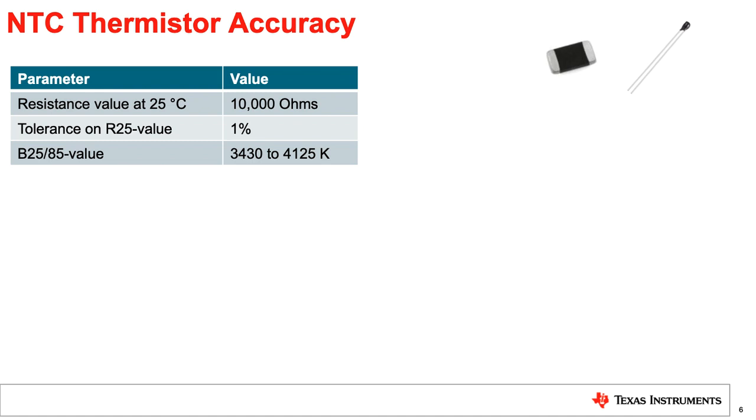The most common misconception with accuracy is often with NTC thermistors. We hear often that a design is getting 1% accuracy with a thermistor, however, this is usually not the case. So let's dive into where that 1% comes from and what it actually means.